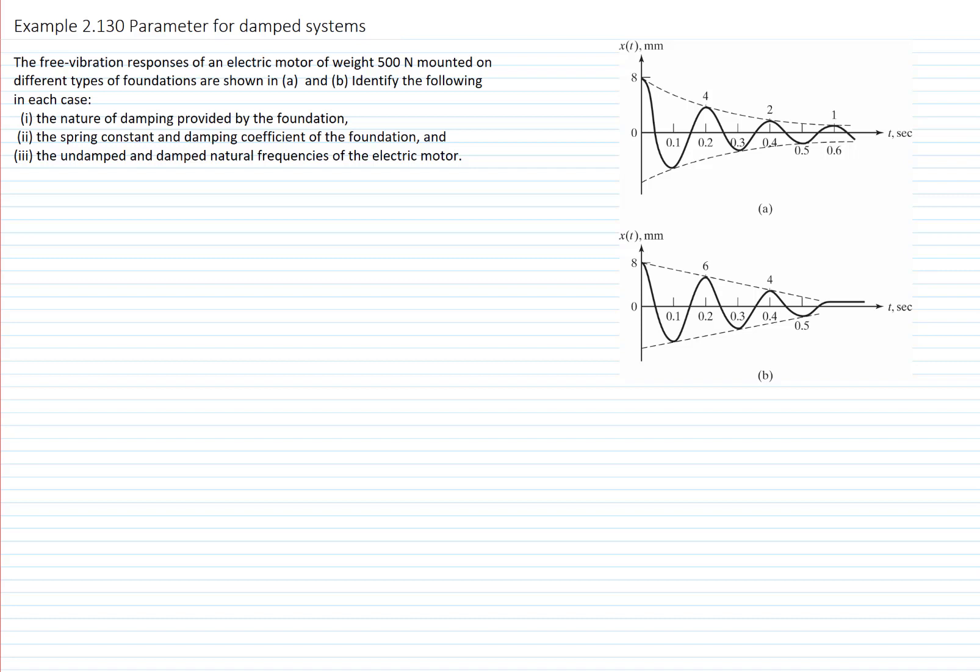This is problem 2.1.30 and we will calculate some parameters for different damping systems. The free vibration responses of an electric motor of weight 500 N mounted in two different types of foundations are shown. We want to first describe the nature of the damping provided by the foundation, and second, calculate the parameters of the systems — that means the spring constant and the damping coefficient — as well as the natural frequency and the damped natural frequency of the electric motor.